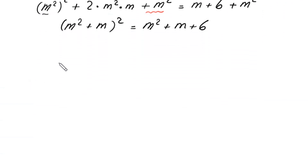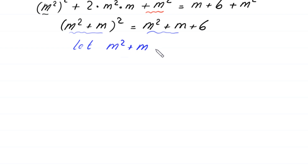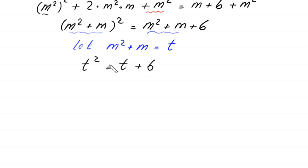Now suppose that m² + m = t. Substituting, we get t² = t + 6. Moving both terms to the left-hand side gives t² - t - 6 = 0.